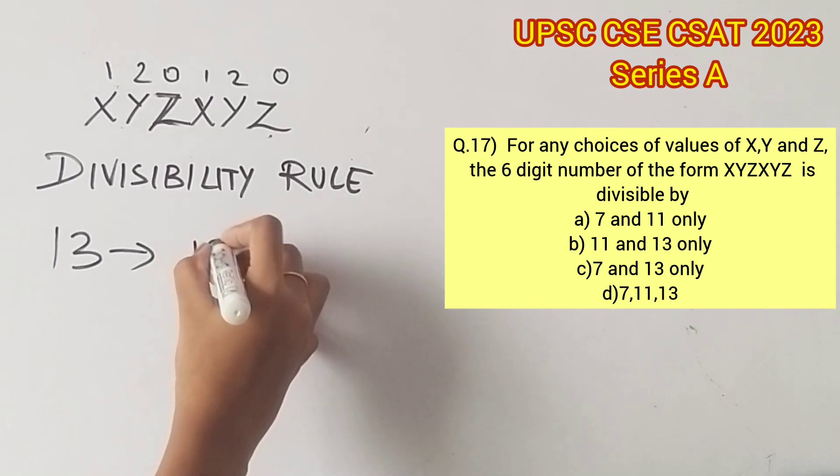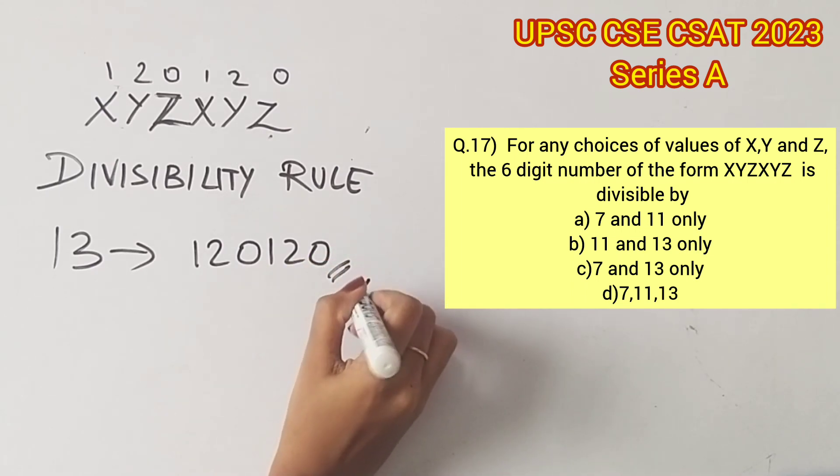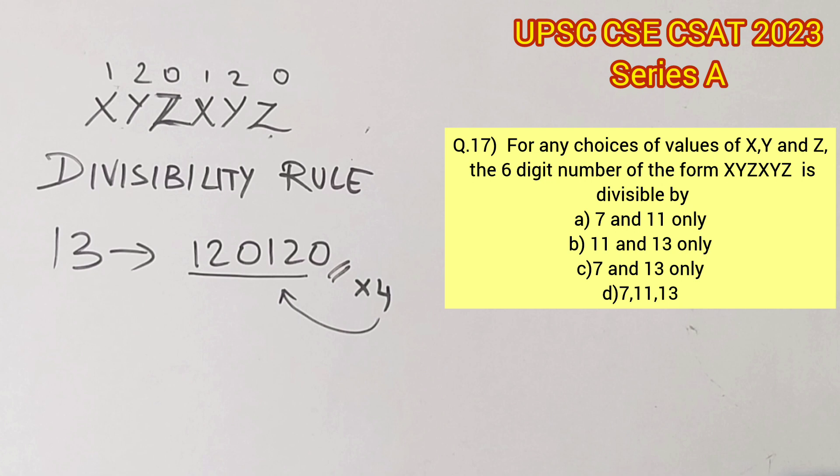To check if a number is divisible by 13, we have to multiply the last digit by 4 and then add it to the rest of the digits in the value. This process is repeated until we get a smaller value. And if that smaller value is divisible by 13, we can conclude that the whole value is also divisible by 13.